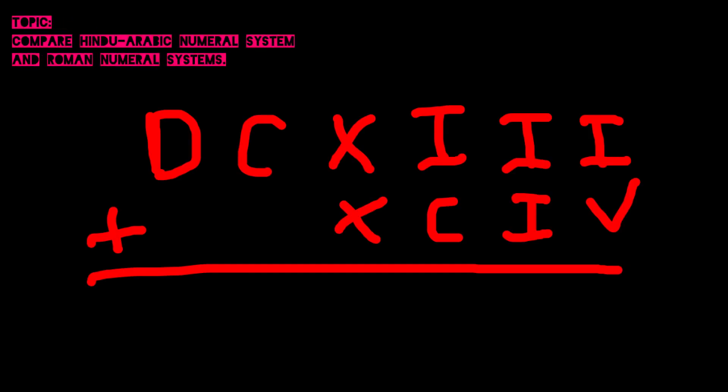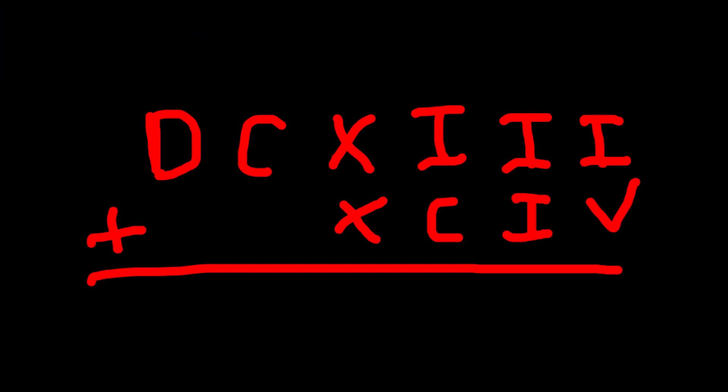I plus V equals VI, which is six. You don't know whether you're going to leave the V and carry the I, or leave the I and carry the V, or leave them together. For example, if I decided to leave the V and carry the I, the next column would have three I's to add up, and it's hard to fit more than one letter in the column.